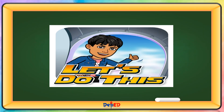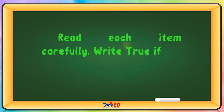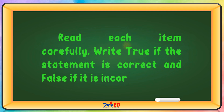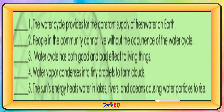Activity: Write true if the statement is correct and false if it is incorrect. The water cycle provides a constant supply of fresh water on earth — true. People in the community cannot live without the occurrence of the water cycle — true. The water cycle has both good and bad effects on living things — true. Water vapor condenses into tiny droplets to form clouds — true. The sun's energy heats water in lakes, rivers, and oceans, causing water particles to rise — true.